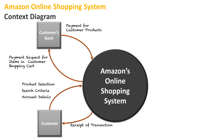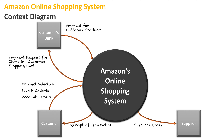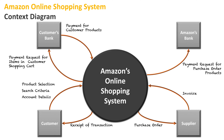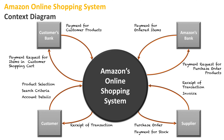That covers the customer's interaction with Amazon's online system. But we've got to think about what's happening within Amazon. People are buying products, the products are decreasing in quantity, and Amazon needs to purchase more. So Amazon needs to contact suppliers and create a purchase order saying we need X amount of new products to restock. A purchase order is sent to the supplier, the supplier gives an invoice stating the cost, Amazon contacts their bank with a payment request, the bank gives confirmation, Amazon pays the supplier, and the supplier gives a receipt of the transaction.